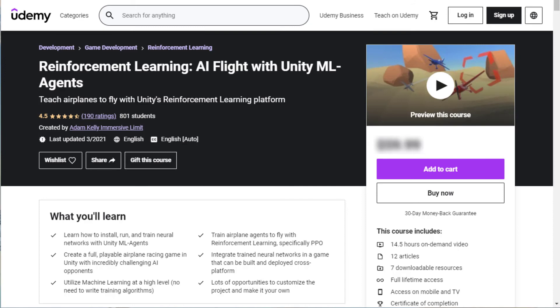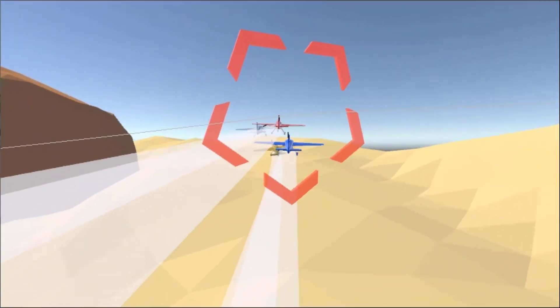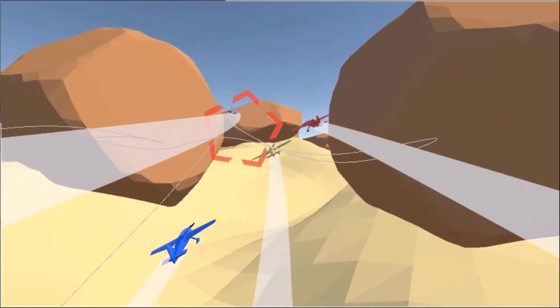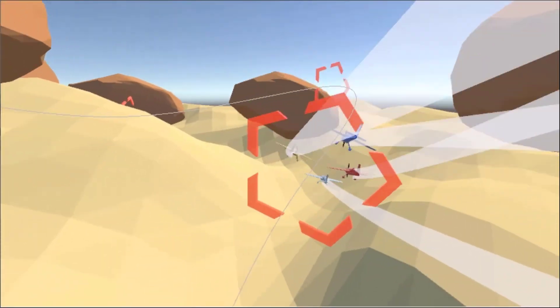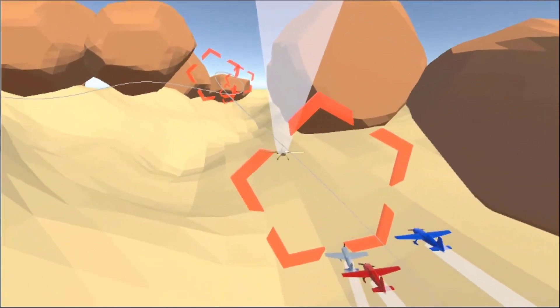So all of that shows a simple case of how an agent is implemented in Unity ML Agents. If you would like to see a more interesting example I recommend this course from Udemy called Reinforcement Learning AI Flight with Unity ML Agents. The course takes you through the entire process of building these artificially intelligent agent airplanes that can race through an obstacle course. I got a lot out of this course and would recommend it if you would like to see a more elaborate example fully worked out in complete detail.